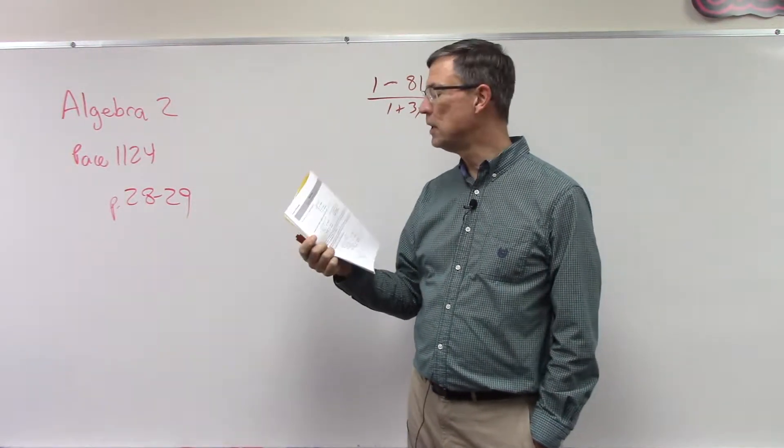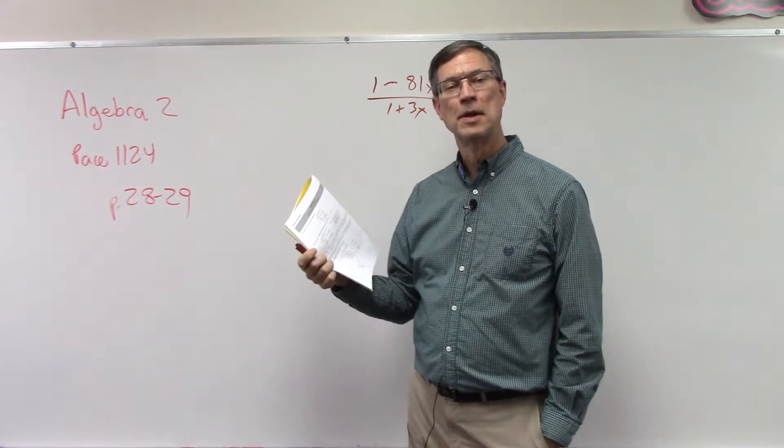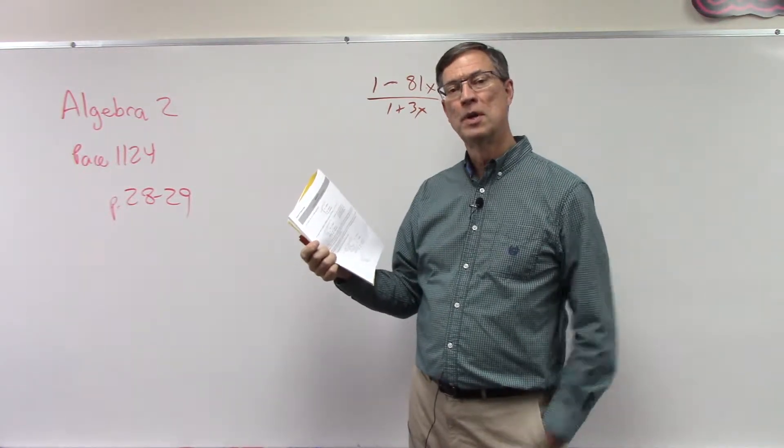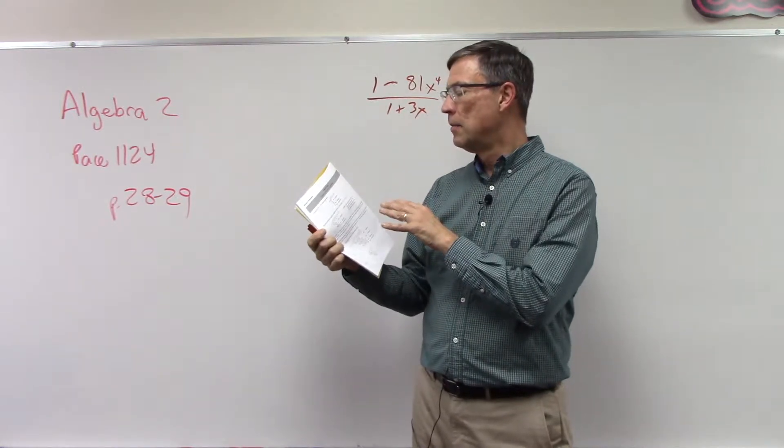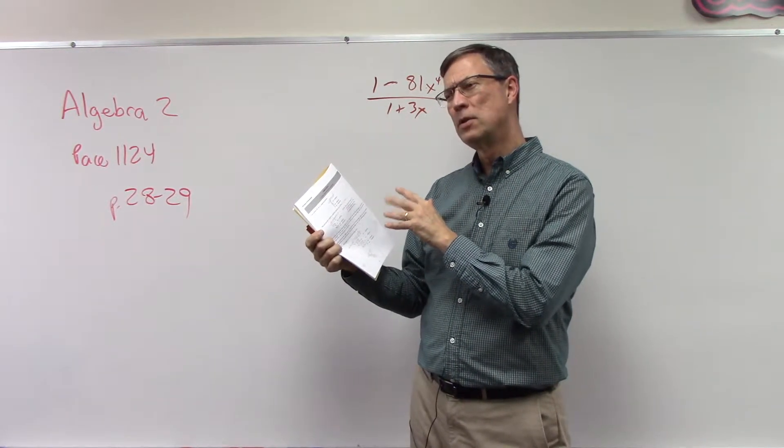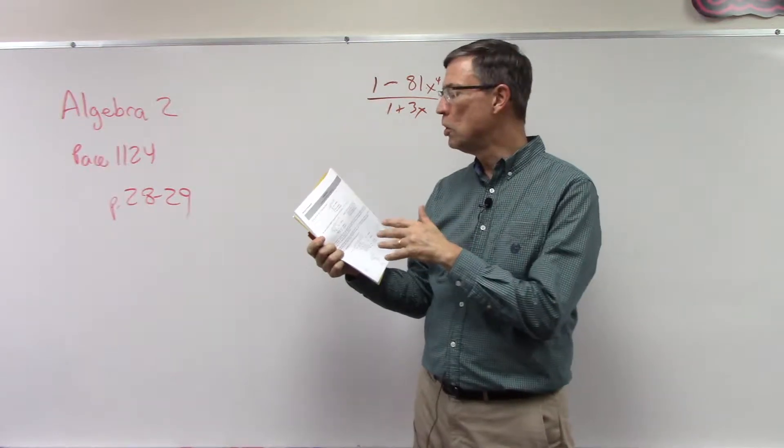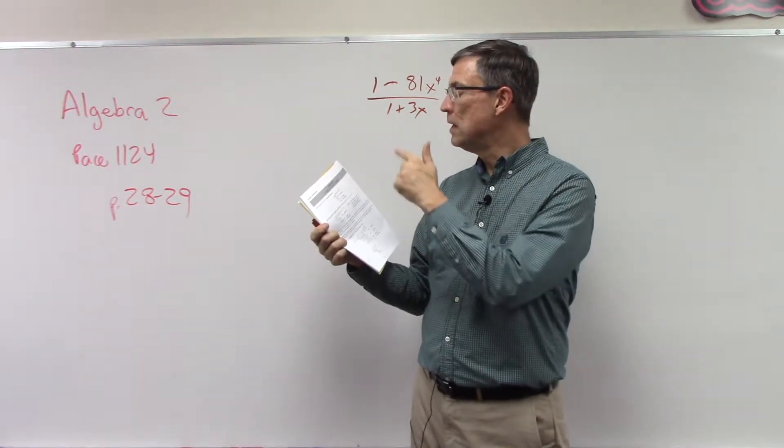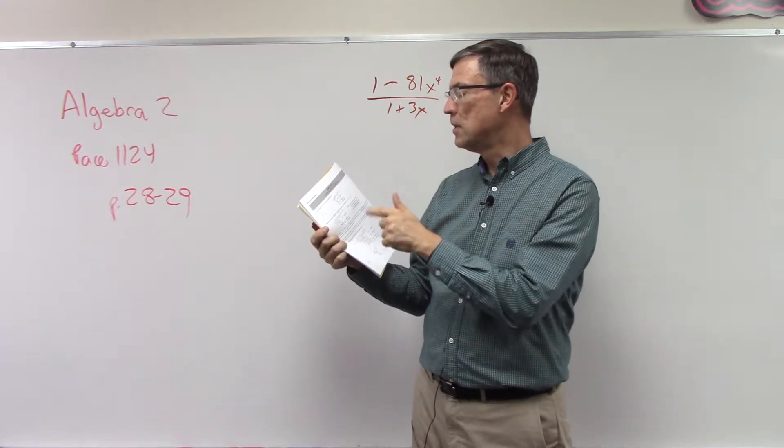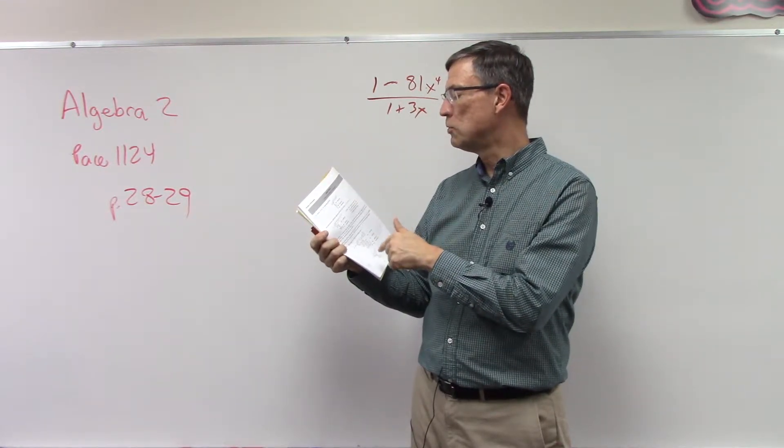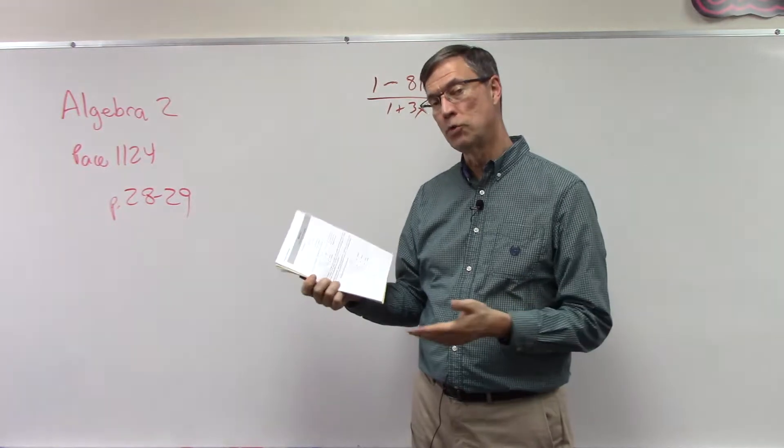It might be good to look at that and remember how we do that back in elementary school. Remember you take the outside numbers and divide it into the number under the, I always call it the doghouse, under the doghouse. Then you put that number up above, multiply it, subtract, take the next number, multiply it, put that underneath, subtract.